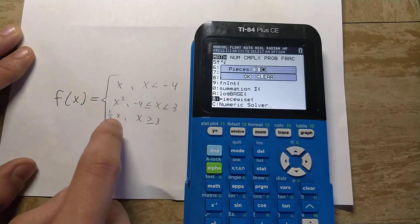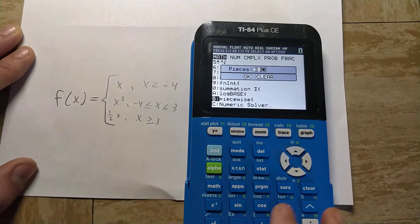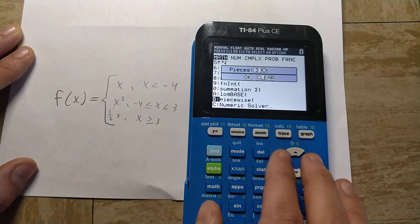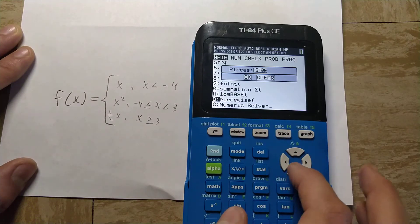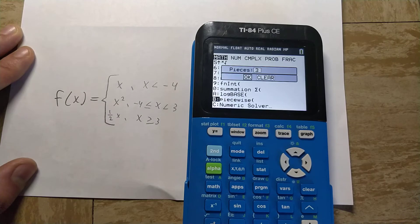So in this example, we have three pieces: one, two, three. We'll just select three pieces, and you can select different numbers of pieces by using the arrow keys here. Let's press the down key and select OK.